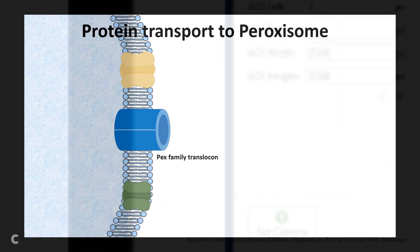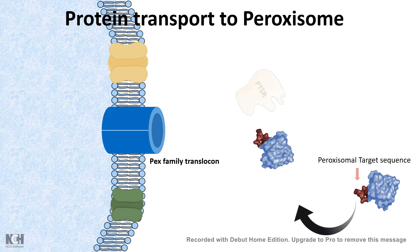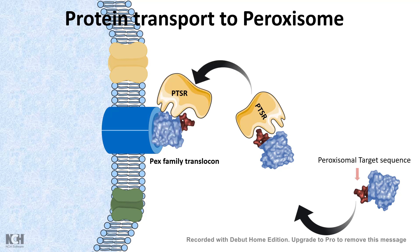This confirms that the C-terminal peroxisome target sequence is sufficient to transport a protein to the peroxisome. Here is how the process works in more detail: the protein of interest — say an oxidase enzyme — needs to be transported into the peroxisome. On the surface of the peroxisome there is a PEX family of translocons. The protein must carry a peroxisomal target sequence, which binds to the peroxisomal target sequence receptor, or PTSR, also known as Pex5.